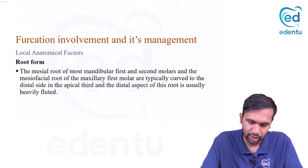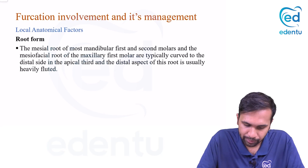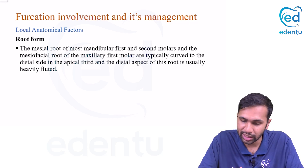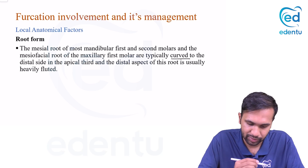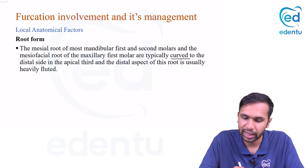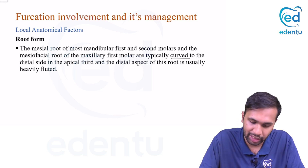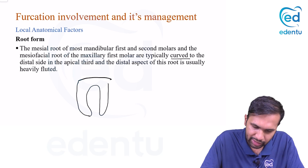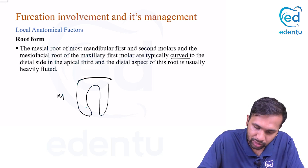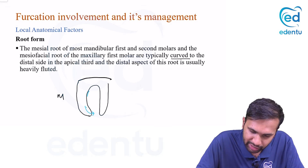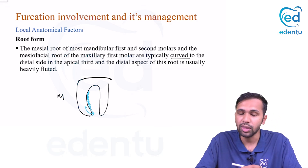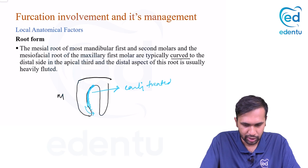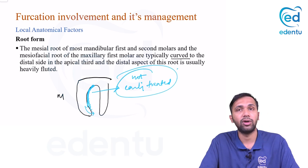Regarding root form: the mesial root of mandibular first and second molars and the mesiobuccal root of the maxillary first molar are typically curved to the distal side in the apical third. The distal aspect of this root is usually heavily fluted — it has concavities. This portion cannot be treated effectively, so once involved, treatment can become complex.